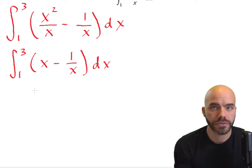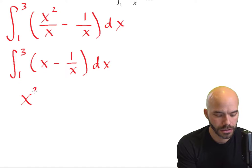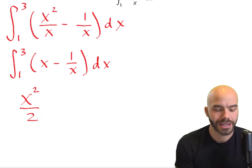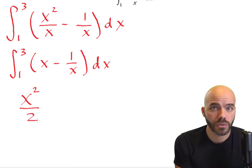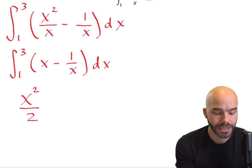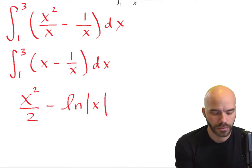So the anti-derivative of x is x squared over 2, and then the anti-derivative of 1 over x is the natural log of x, right?